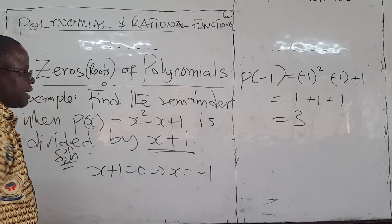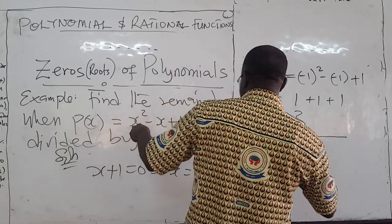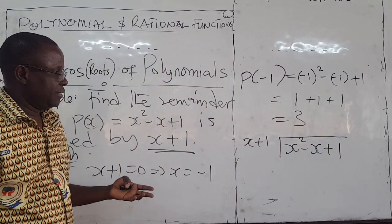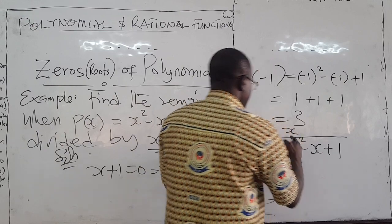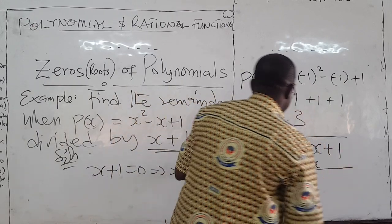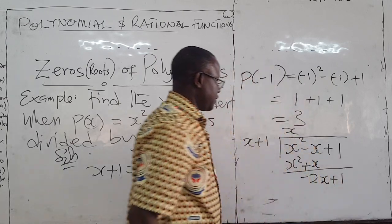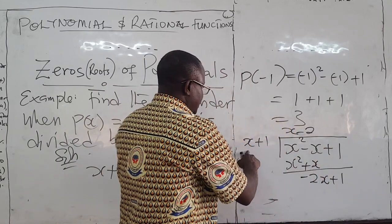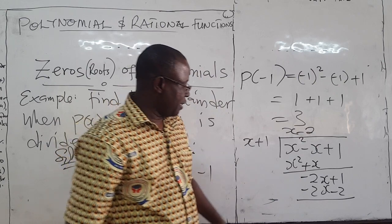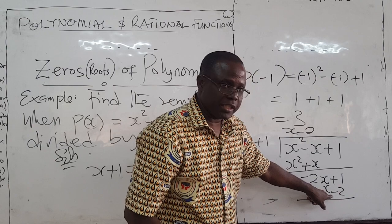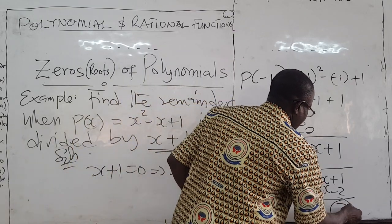Just to check, let's verify using long division — divide x squared minus x plus 1 by x plus 1. x goes into x squared giving x; x times x plus 1 gives x squared plus x. Subtracting gives negative 2x plus 1. Then x goes into negative 2x giving negative 2; negative 2 times x plus 1 gives negative 2x minus 2. Subtracting gives 1 minus negative 2, which is positive 3. So the remainder is 3, which matches what we got using the theorem.